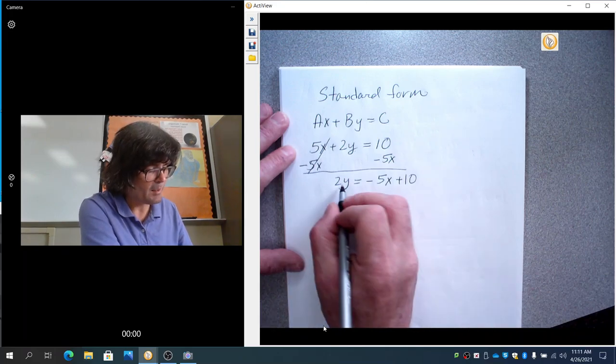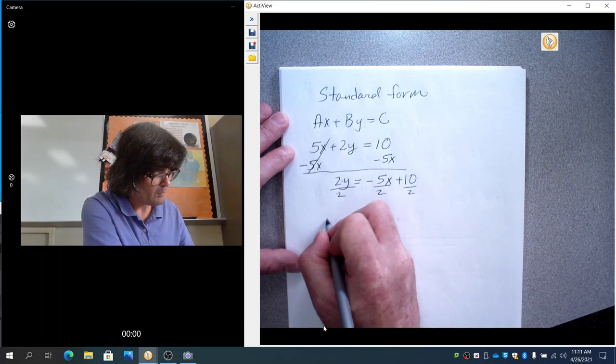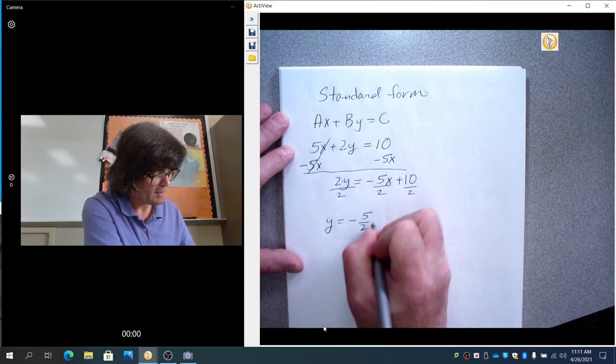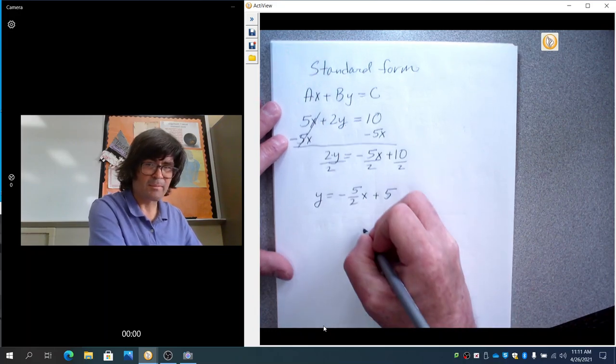2y equals minus 5x plus 10. And then next, I'll get y by itself. This is 2 times y, so we undo it by dividing everything by 2. And we get y equals negative 5 over 2x plus 5. And you can graph that.